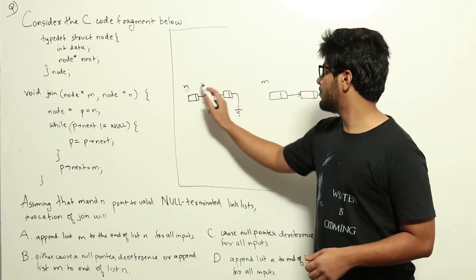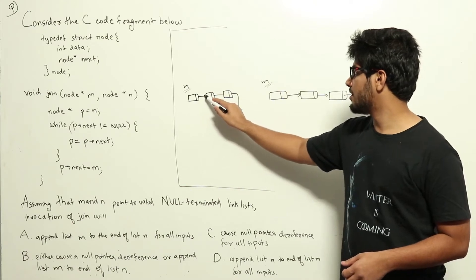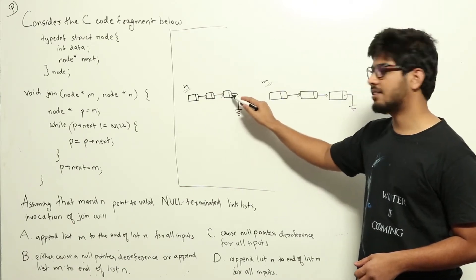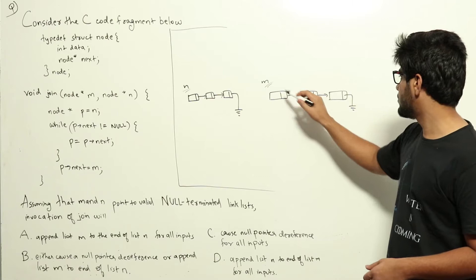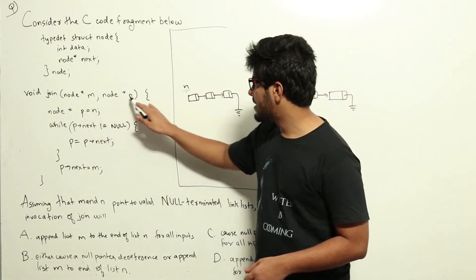M and N would look like this. These are the nodes which has a pointer to the next node like this and the last one would be null terminated. This would be M. So, what we are doing here is we will be passing M and N to this function.